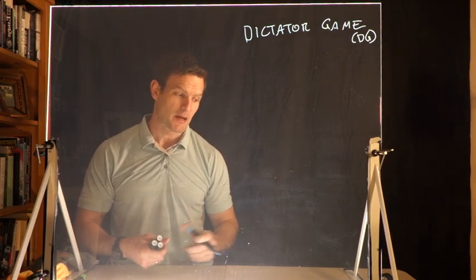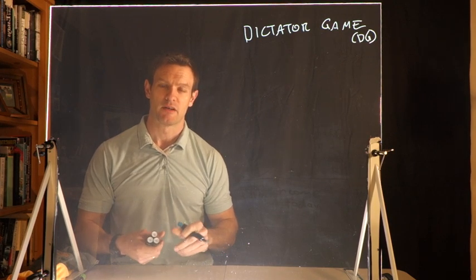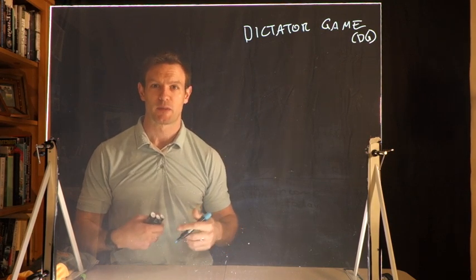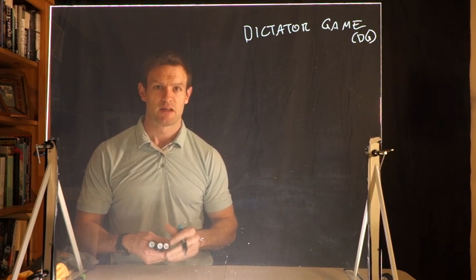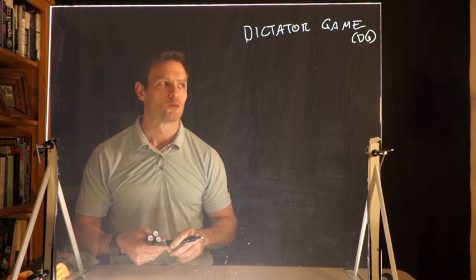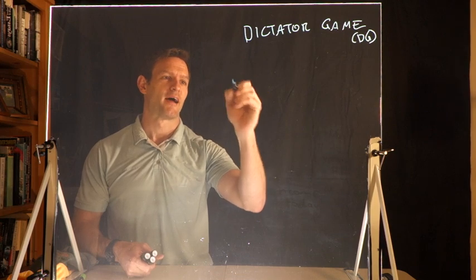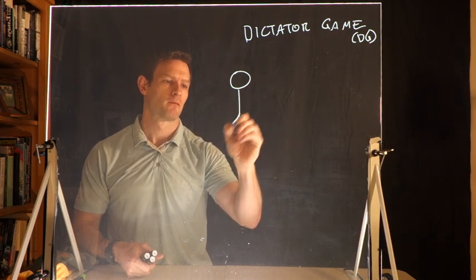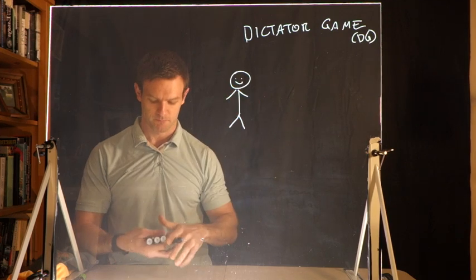We talked previously about the ultimatum game where one player is paired with another player. The first player makes an offer to the second player and the second player can reject it. Now the dictator game is similar, but there are again going to be two people. So we have person A.